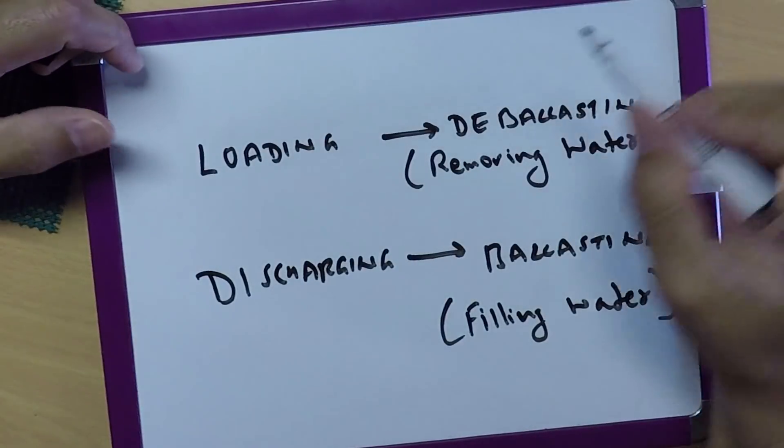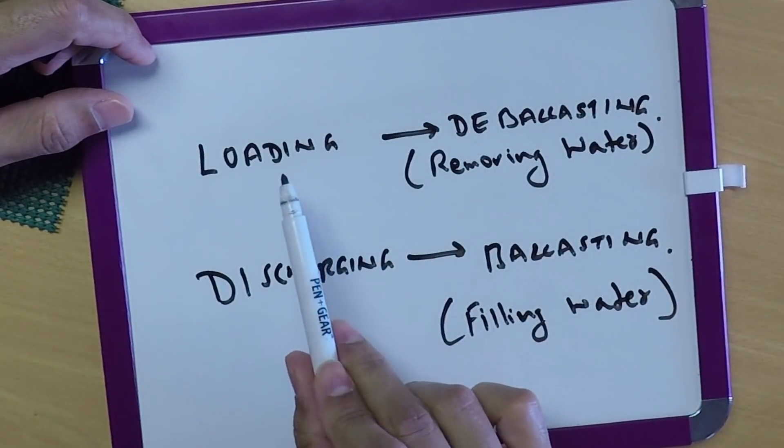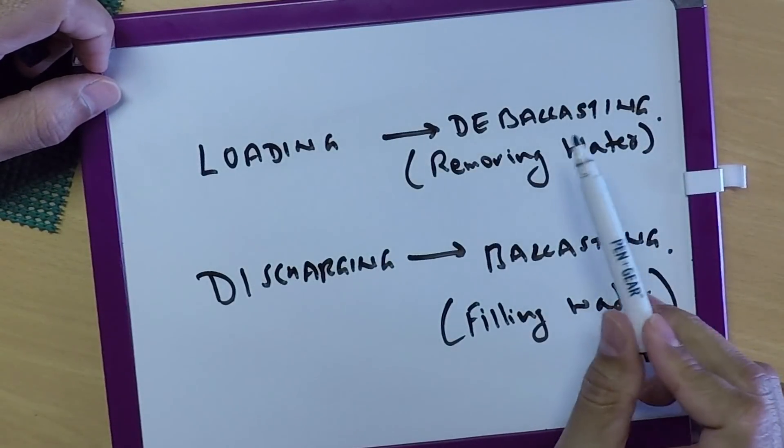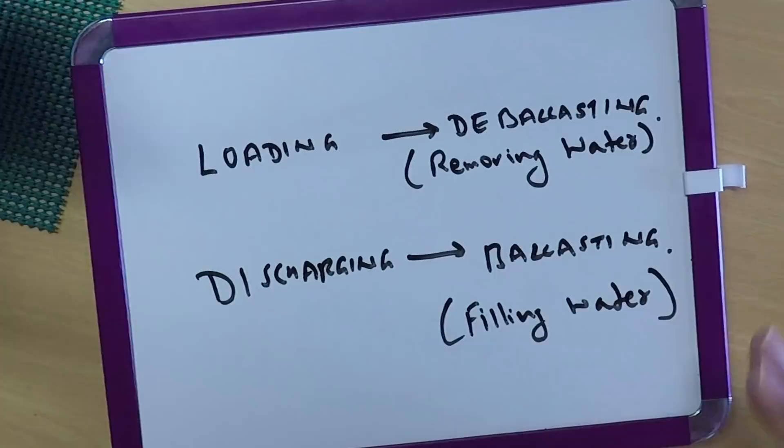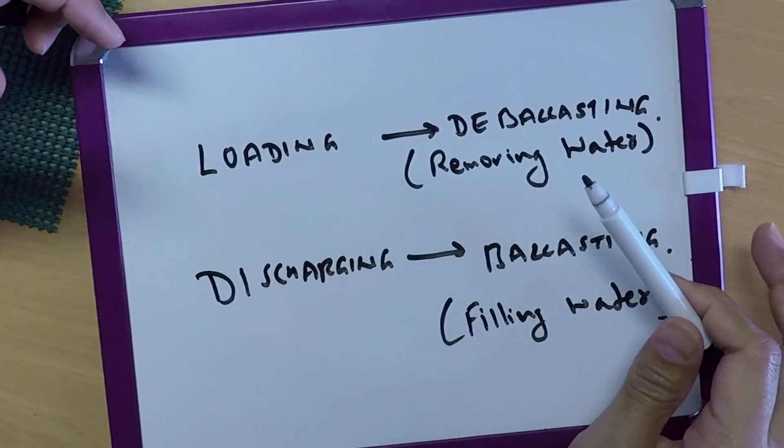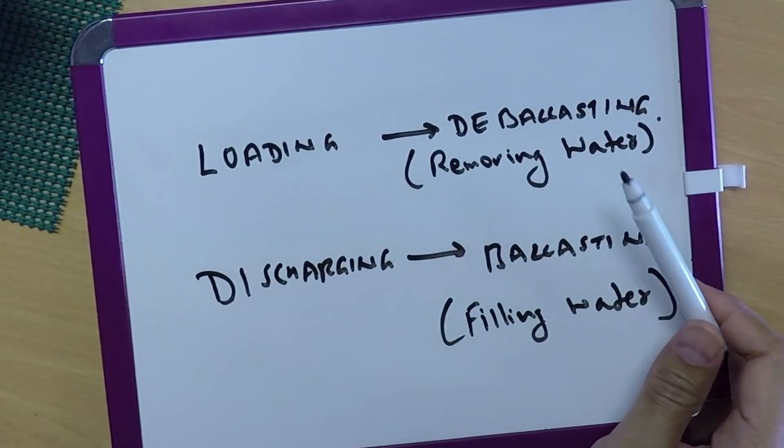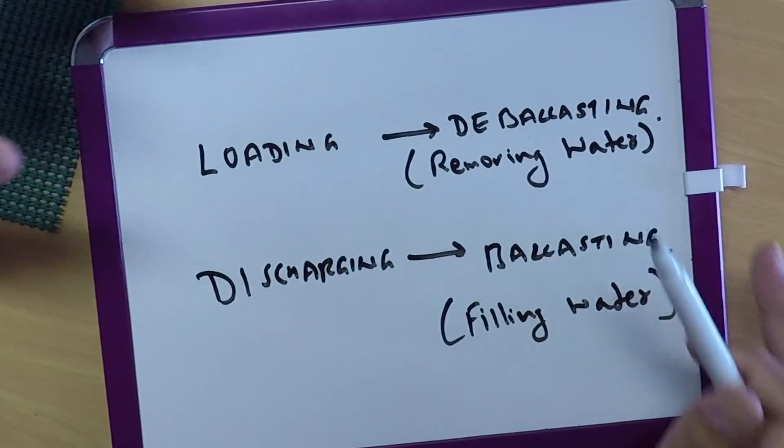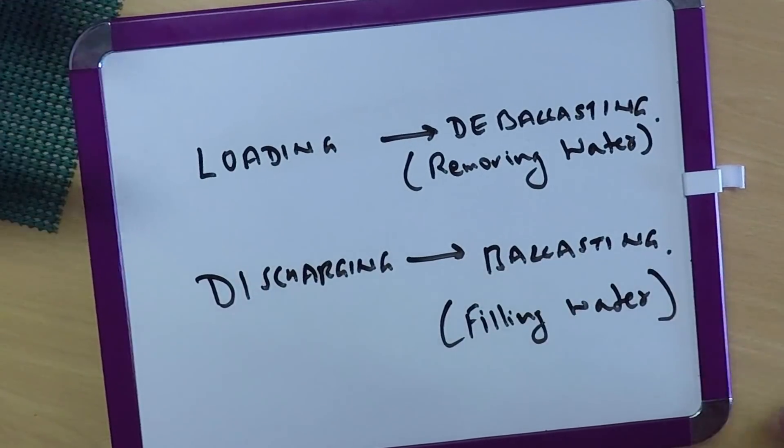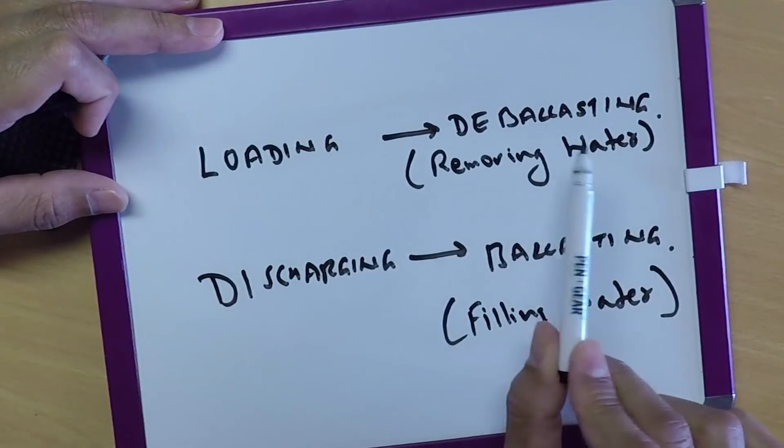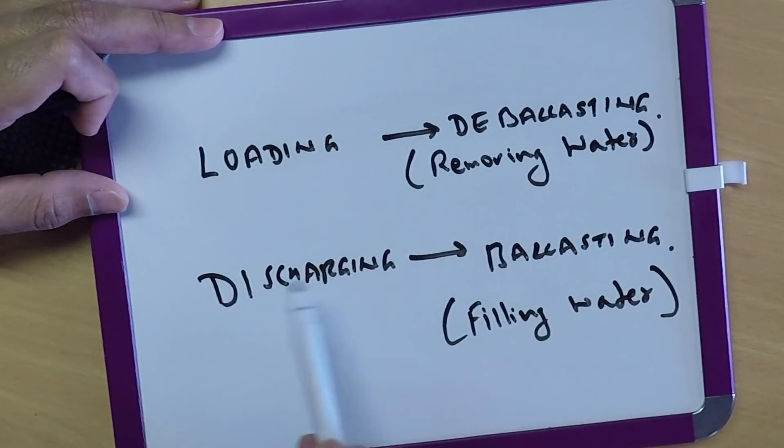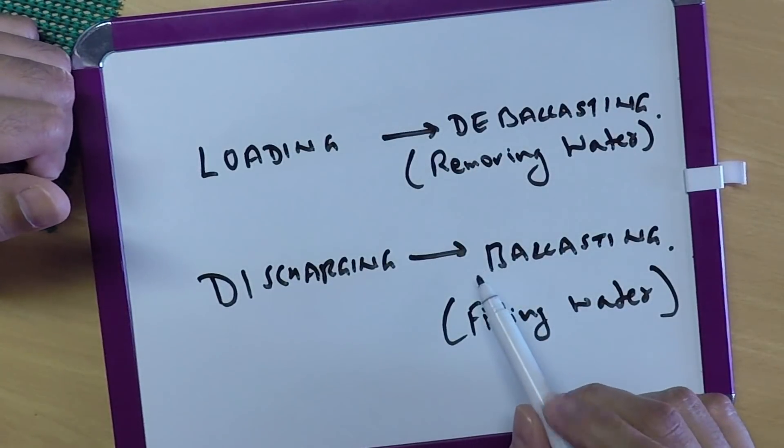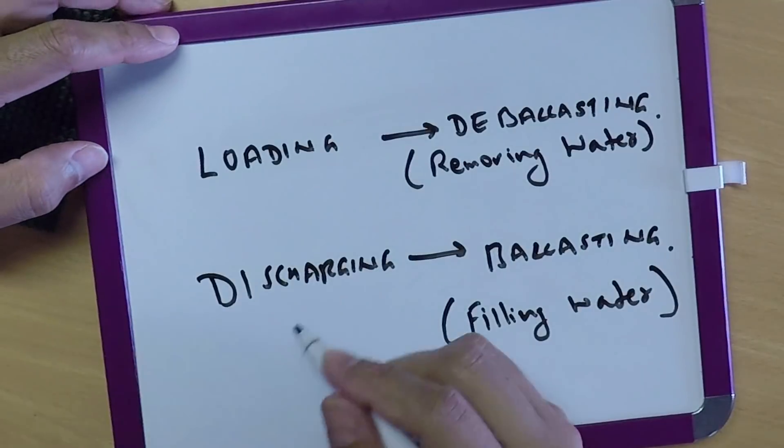Here we need to understand that when the ship is loading, at the same time we are de-ballasting, that is removing water. We cannot have cargo filling as well as water filling in the tanks. If we do that then we will load the ship much more than required and her draft will cross the draft which is allowed. Always when we are loading, we are de-ballasting at the same time. And similarly, when we are discharging, at the same time we are filling our water ballast tanks. That procedure is called ballasting.